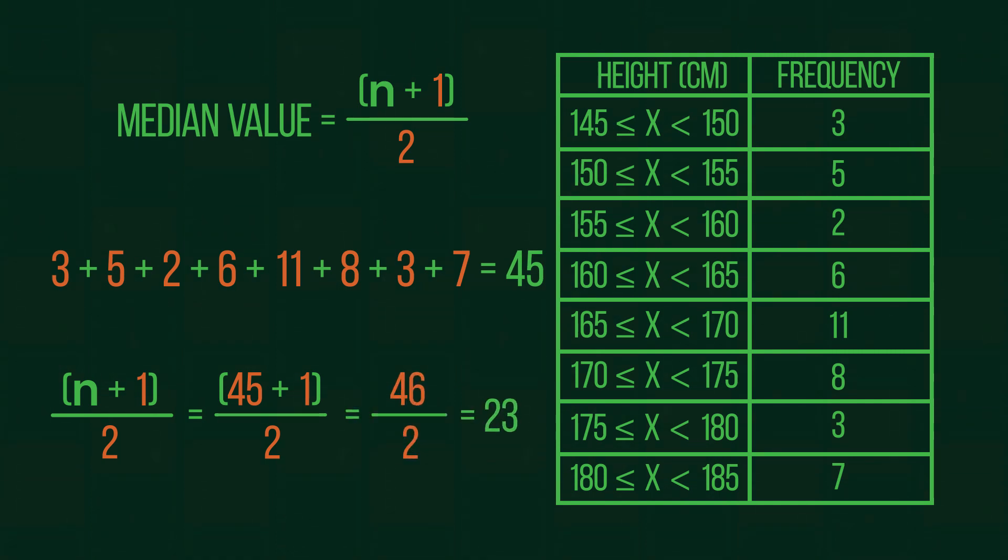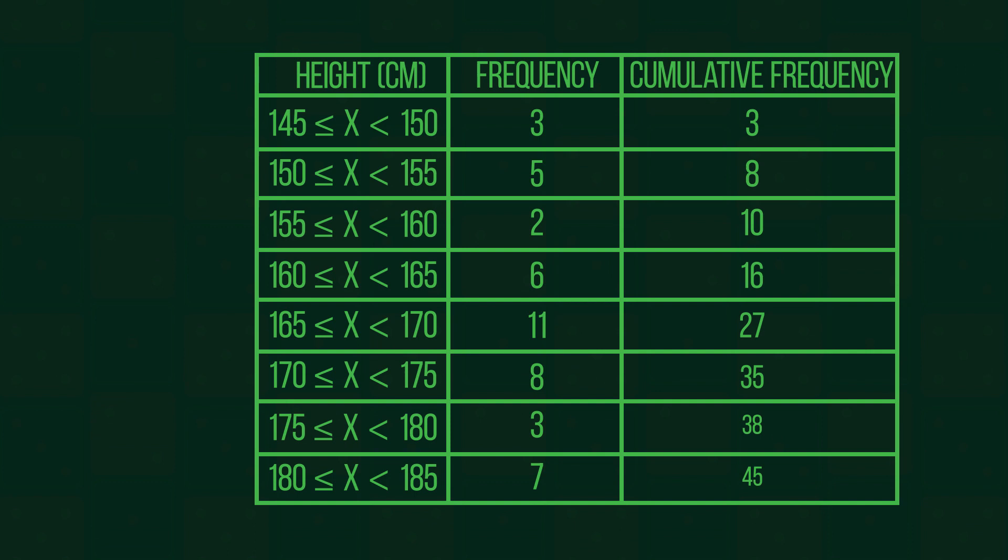We then need to add our cumulative frequency column to our table and look for our 23rd value. Our 23rd value is between the 16th and 27th, so is in the group greater than or equal to 165 and less than 170.